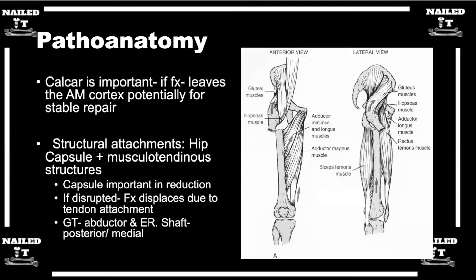Just to recap: talking about our different fragments, our proximal femur fragment will go to abduction because of the abductors — gluteus medius and minimus — and into flexion because of the iliopsoas. Then the external rotators will externally rotate that proximal fragment. In the distal fragment, we're going to adduction because the adductors are working on that. For simple fractures, our technique for closed reducing these is traction and internal rotation to allow that distal fragment to meet up with the proximal fragment.